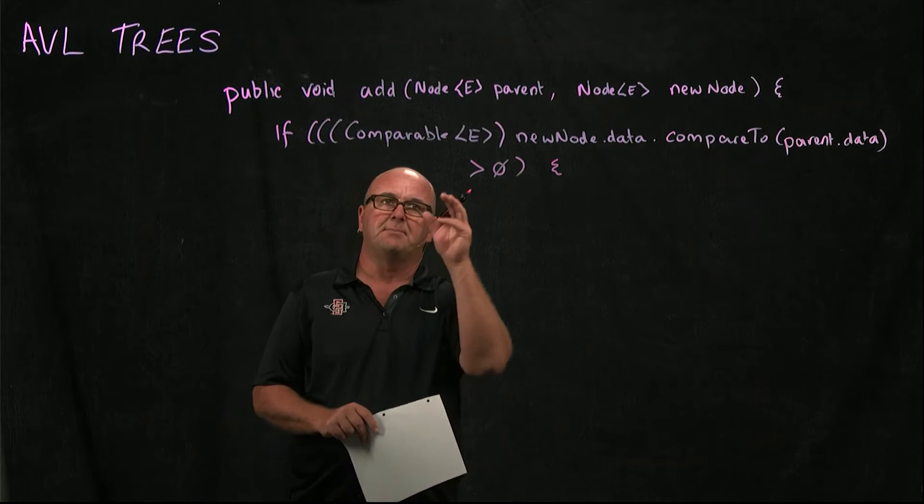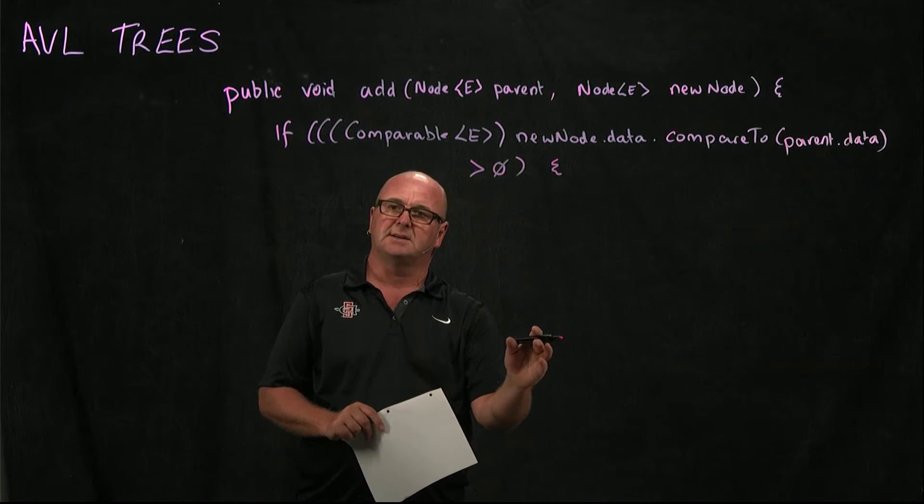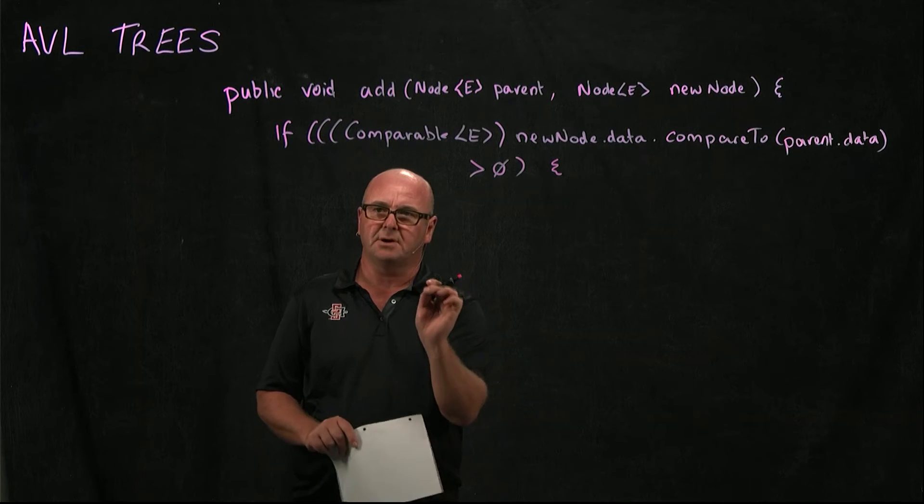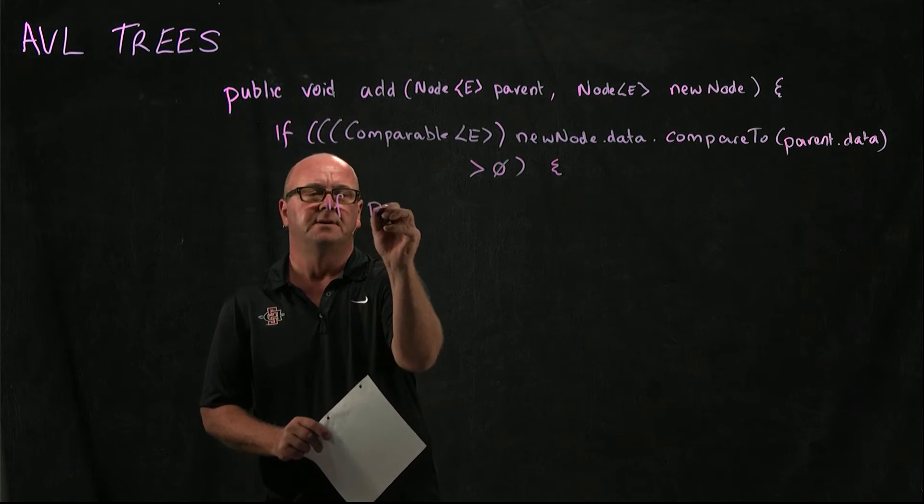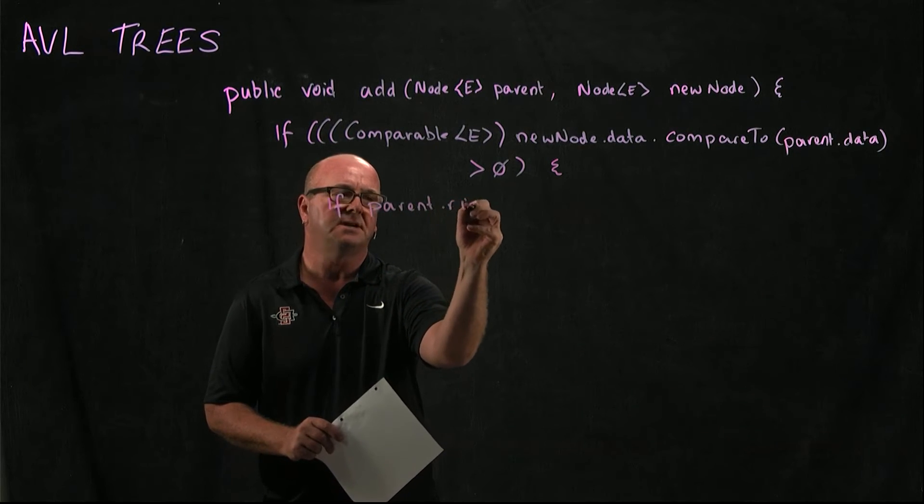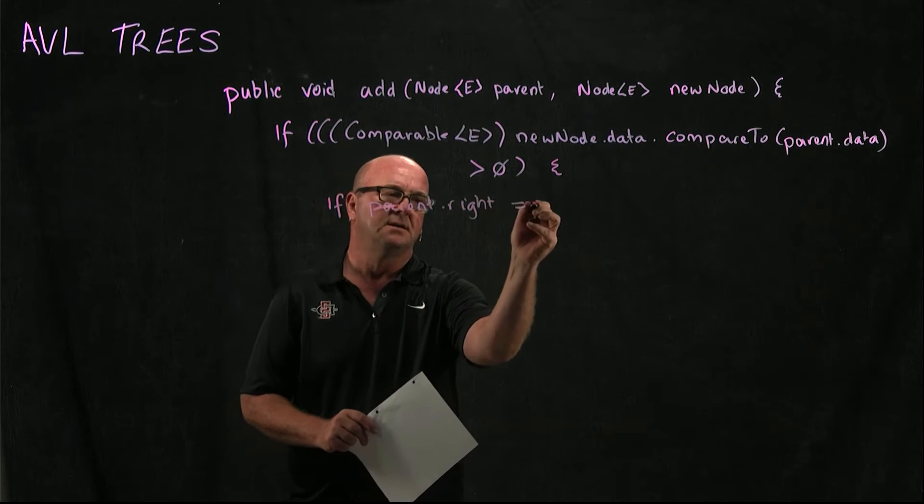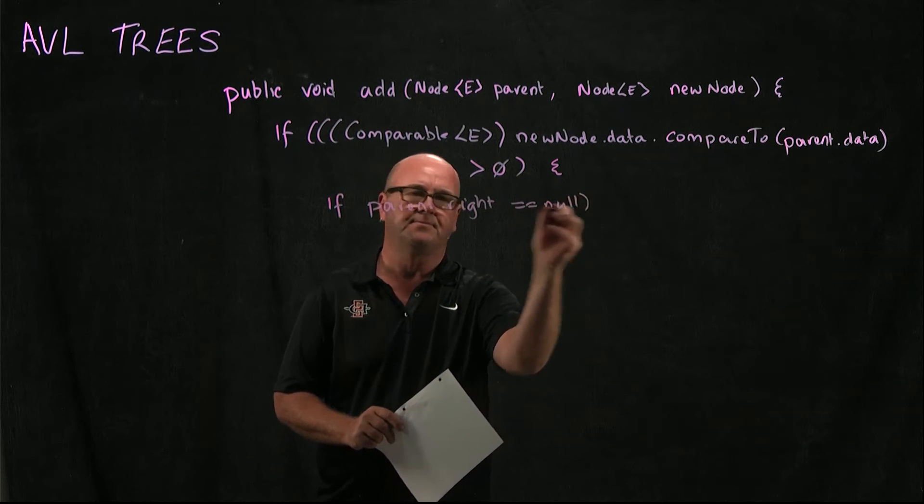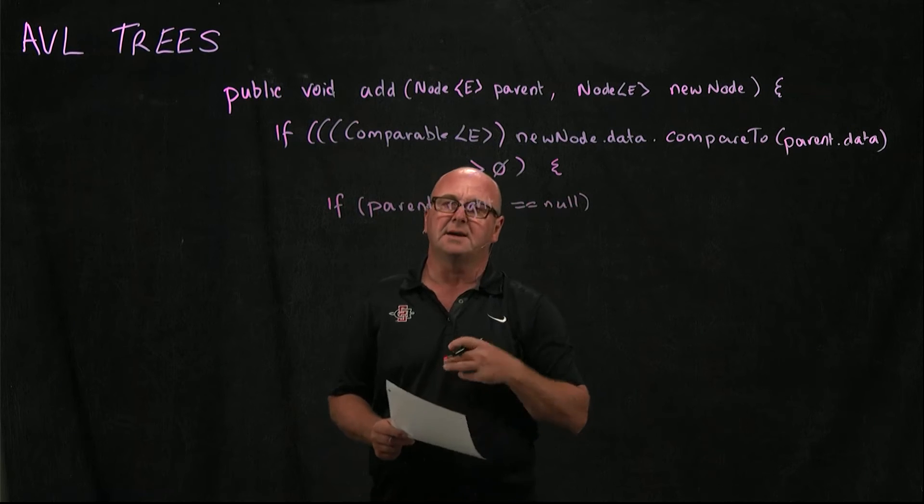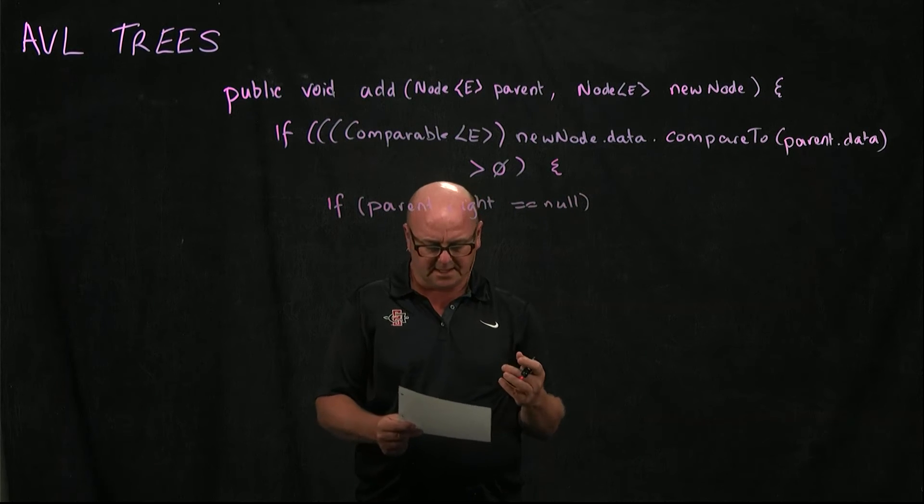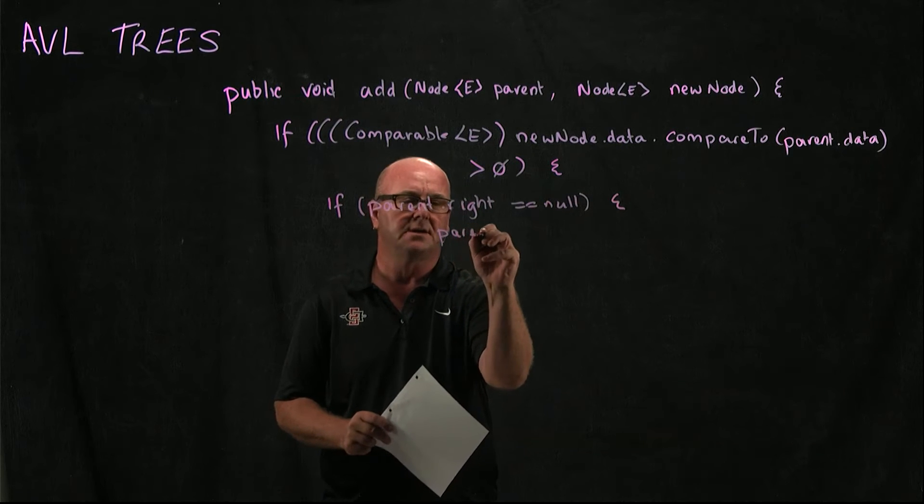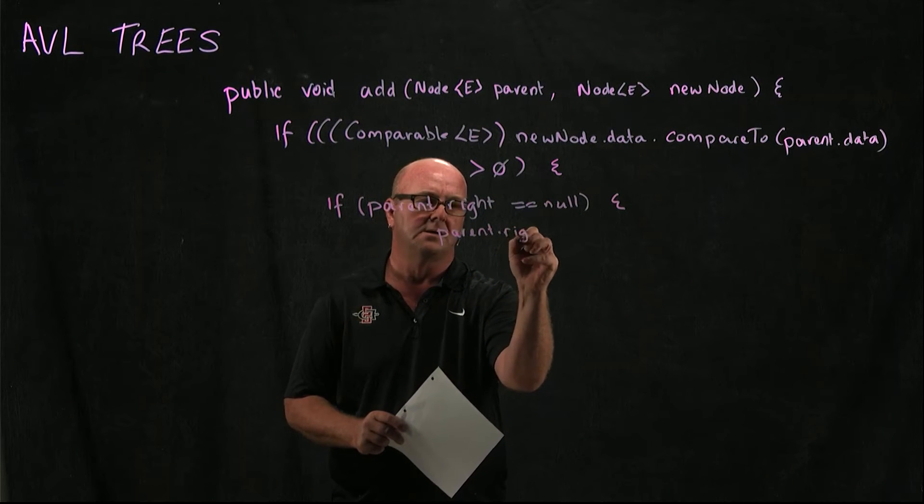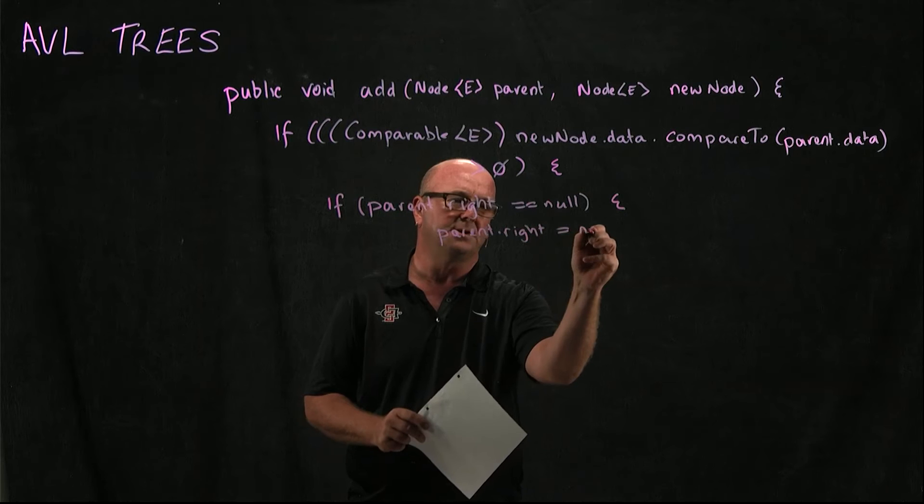So if our parent node's right side is null, that's where we're going to put the new node. So if parent.right is null, that's where we're going to put our new node. Then parent.right is equal to newNode.